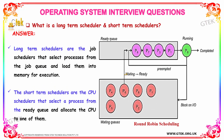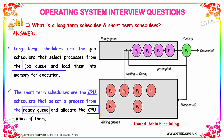What is a long-term scheduler and a short-term scheduler? Long-term schedulers are job schedulers that select processes from the job queue and load them into memory for execution. Short-term schedulers are CPU schedulers that select processes from the ready queue and allocate the CPU to one of them so that it can execute.